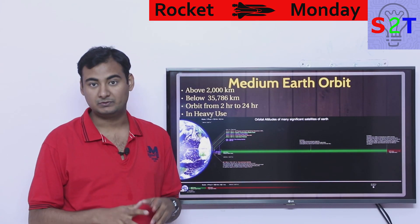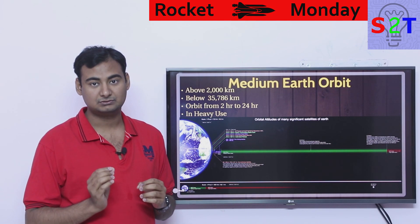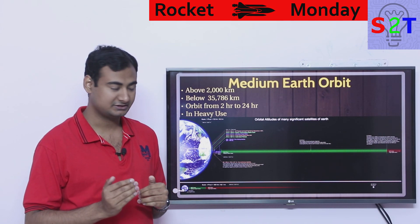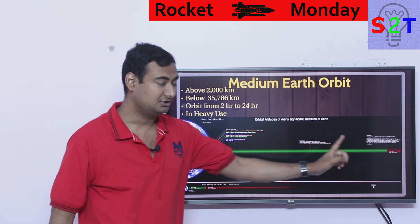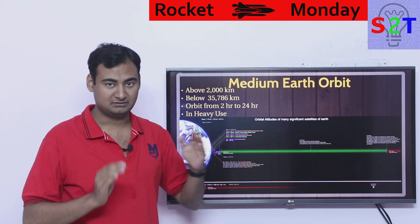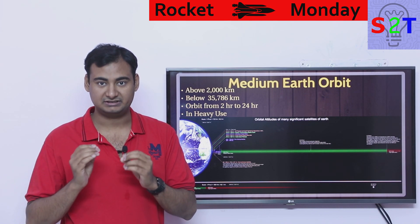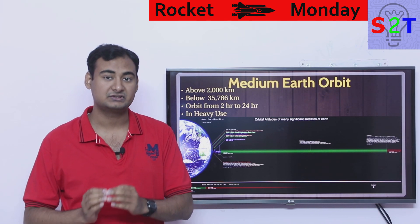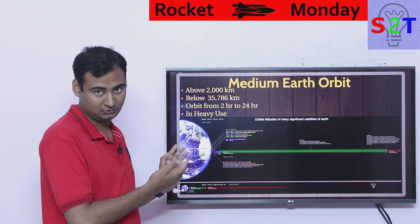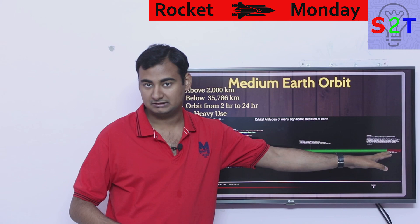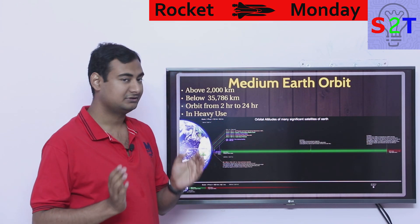First thing you have to understand is where does this begin. If you remember, I told you that LEO is a very narrow band from earth's surface — basically most of LEO is very close to the surface. The geostationary band, where you can precisely match the rotation of earth with an orbit of exactly 24 hours, is also a very narrow band. In between we classify as medium earth orbit.